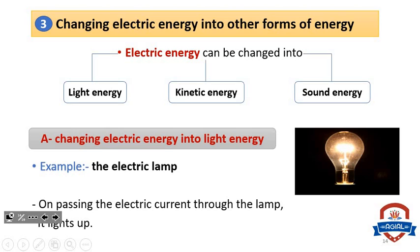Number three: changing electric energy into other forms of energy. Electric energy can be changed into light energy, kinetic energy, and sound energy. Number one: changing electric energy into light energy.